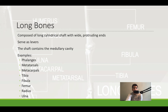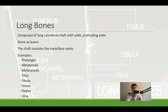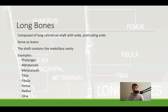Long bones have a long cylindrical shaft with wide, protruding ends. They are predominantly your movement-based bones. The shaft has a medullary cavity where hematopoiesis can occur. Don't think long bones have to be massive — phalanges, metatarsals, and metacarpals technically are long bones because of their structure. The tibia, fibula, femur — which runs from your hip to your knee — and the radius and ulna are all long bones because of their long, cylindrical shape with rounded ends.